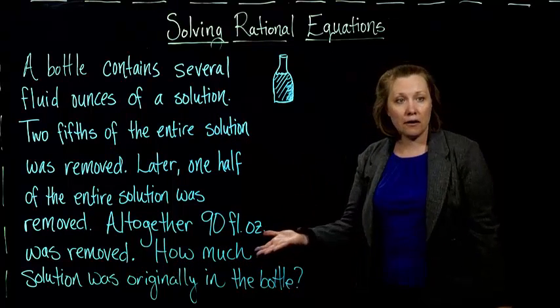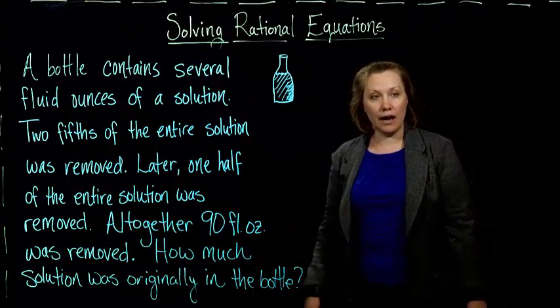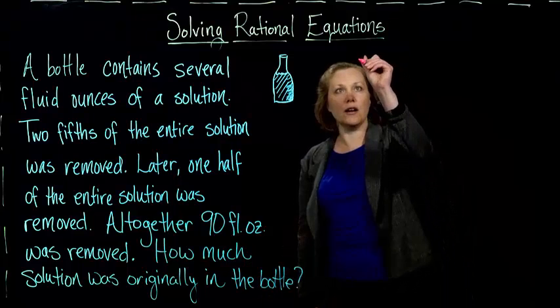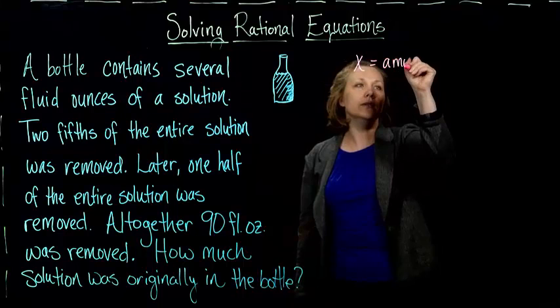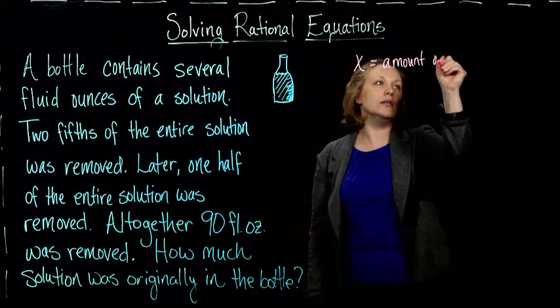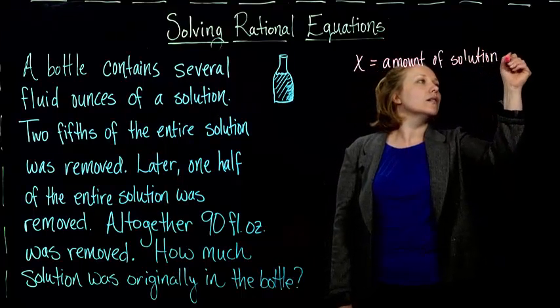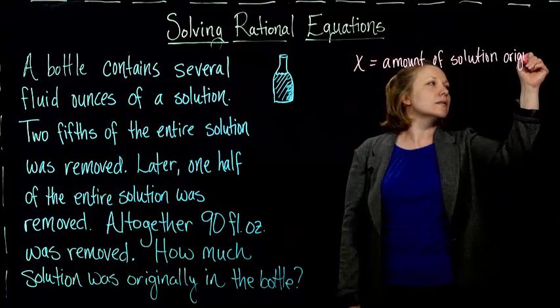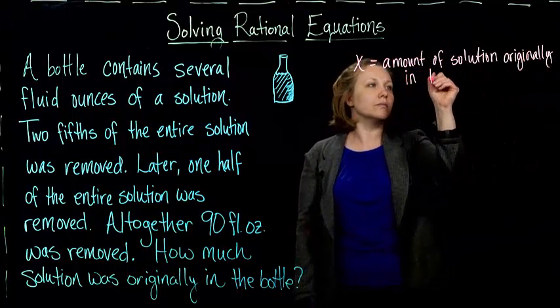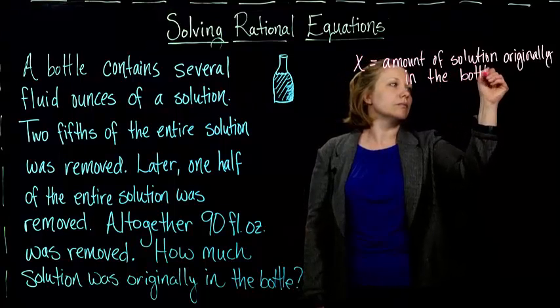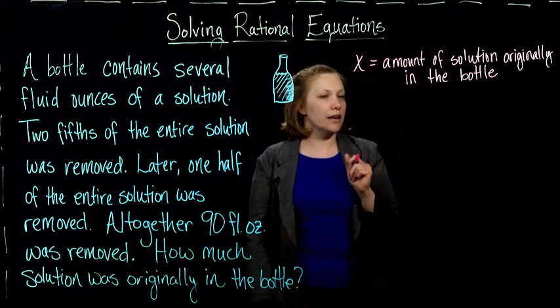We want to set up a variable to represent what we're trying to find. We're trying to find how much solution was originally in the bottle. So I'm going to let X be the amount of solution originally in the bottle. That's what I'm trying to figure out.